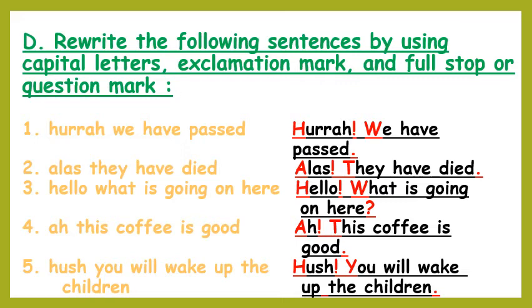Second: Alas, they have died. Alas is an interjection, so A in capital followed by an exclamation mark, then T of 'they' in capital: Alas! They have died, full stop. Third: Hello, what is going on here? Hello is an interjection, so H in capital followed by an exclamation mark, then W of 'what' in capital: Hello! What is going on here, question mark.